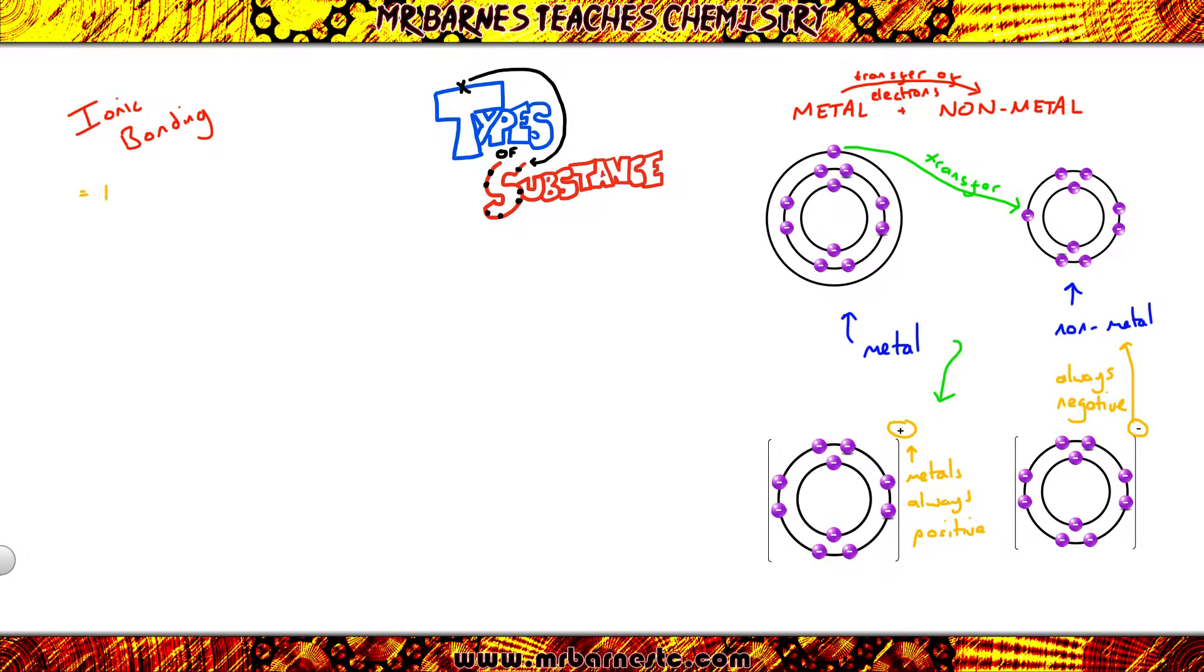Metals are always positive and non-metals are always negative. Now the definition for ionic bonding is the strong electrostatic attraction between an anion and a cation. An anion is a negative ion, try and remember that, and your cation, think cat, paws, positive.